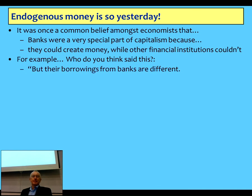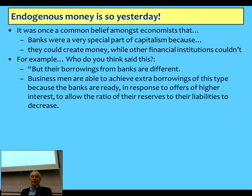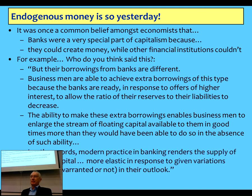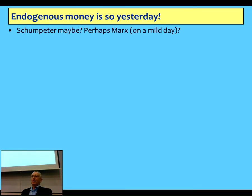Take a look at this set of statements: borrowing from banks is different. Businessmen can achieve extra borrowings because the banks are ready to allow the ratio of their reserves to liabilities to decrease. This enables them to expand the flow of semi-floating capital available to them more than they do in the absence of that ability from banks. In other words, modern banking makes the monetary supply more elastic. Who do you reckon said that? Any guesses? It sounds like something Schumpeter might have said, or Marx if he wasn't using his usual adjectives.